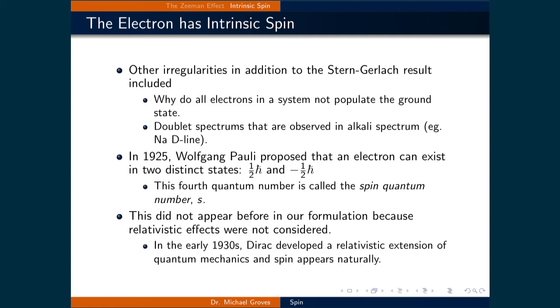In 1925, Wolfgang Pauli proposed that an electron can exist in two distinct states, one-half and negative one-half. This fourth quantum number is called the spin quantum number, using S as the letter to define it. It does not appear in our formulation because relativistic effects were not considered, and in the early 1930s, Dirac developed a relativistic extension of quantum mechanics where spin appears naturally.